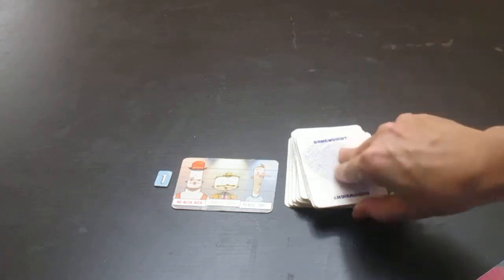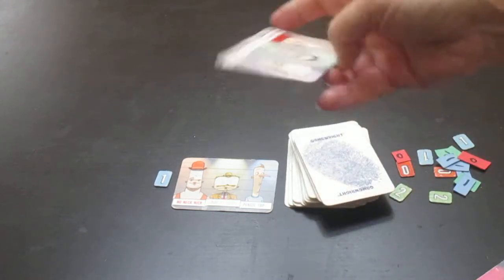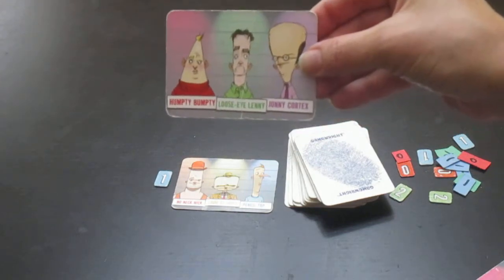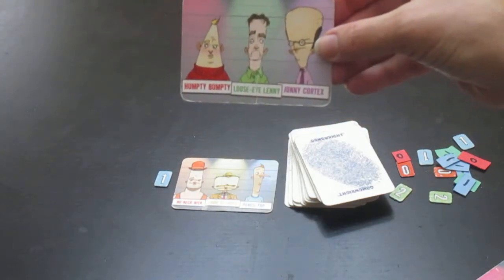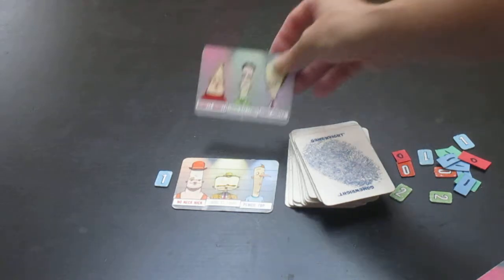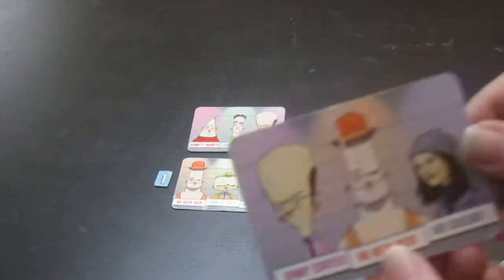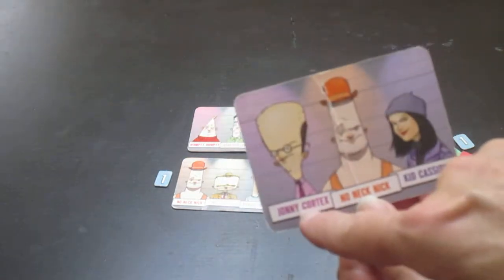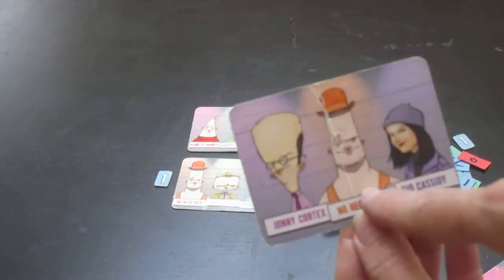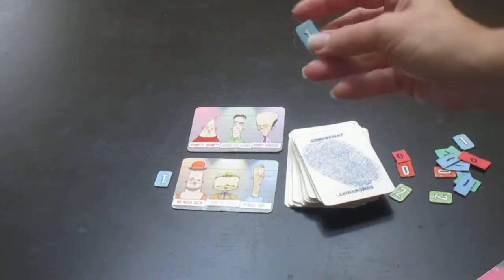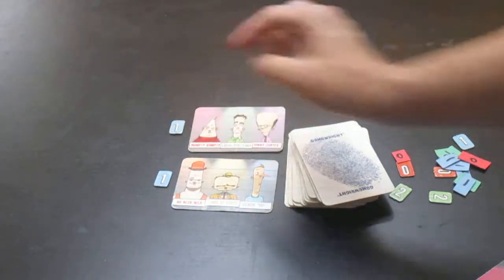The next person picks a card and draws it and lays it out for everybody to see. We have Humpty Bumpty, Loose Eye Lenny, and Johnny Cortex. Again the eyewitness looks at their card and says, okay, I have Johnny Cortex and that is the only one that's on that card. Once again they pick the number one and they lay it by there.